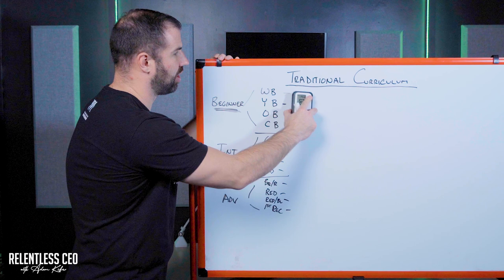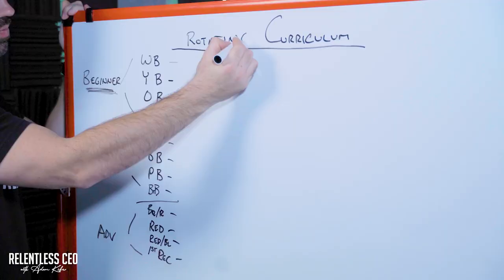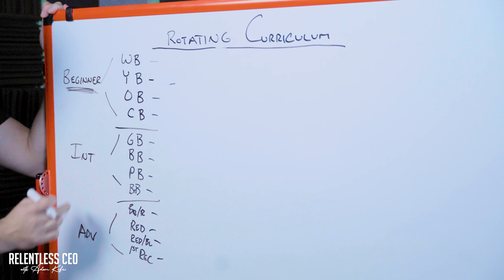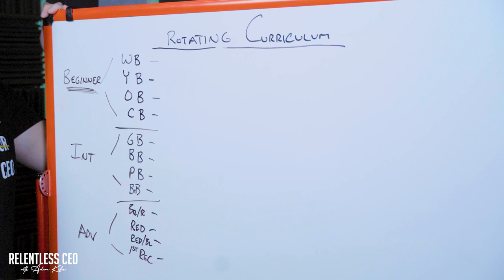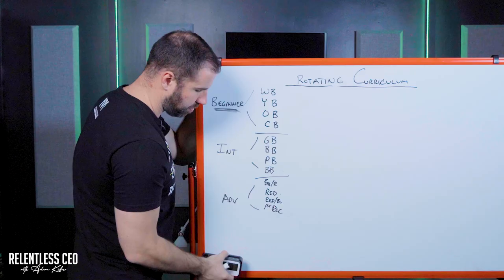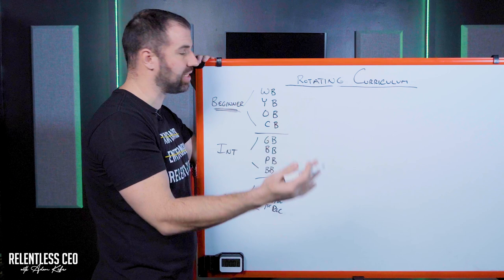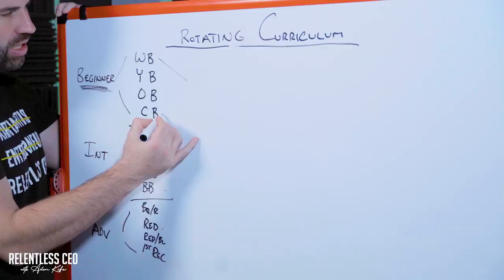So this is how we don't want to do things. Let's jump into what a rotating curriculum would look like. We still have beginner, intermediate, advanced for this example. Previously, curriculum was segmented by belt — not anymore. With rotating curriculum, the whole plan is to have a class with white belts, yellow belts, orange belts, and camo belts, but everyone in the class is doing the same requirements at the same time.